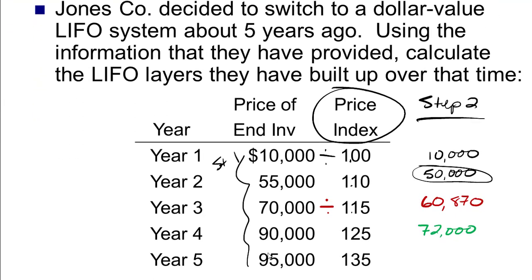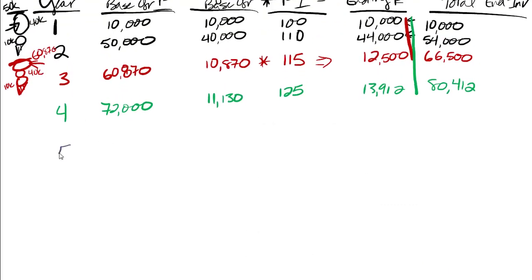Companies might do that purposely or unintentionally. And that gives them a higher net income because they're using up this older stuff that we paid less for. Same thing with dollar value, we can liquidate the layers. We need to take a look at what happens when we end up with less ice cream than we started with. Let's take a look at year five. We take the $95,000 divided by the $135,000 and we end up with $70,370. You can see right away, value has dropped. We were at $72,000, now we're down to $70,370. Obviously, we've eaten some of our ice cream.